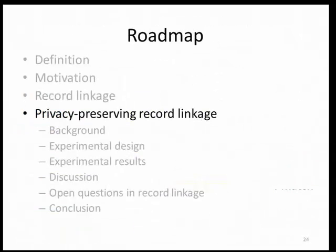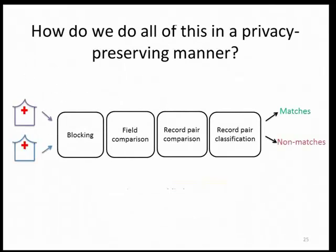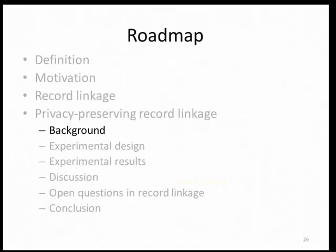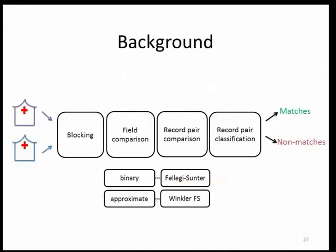Now we'll move into privacy-preserving record linkage and ask how we can move all of these steps into the privacy-preserving realm. I'll start by giving background on what's been done in the field. I'll focus on the field comparison and record pair comparison steps. In the experiments presented today we use small data sets so we don't use blocking, and record pair classification is done based on estimates of the proportion of record pairs that are matches as indicated by the EM algorithm.